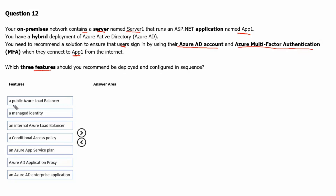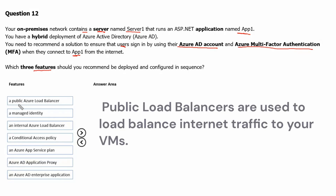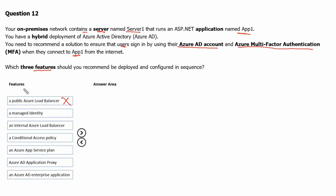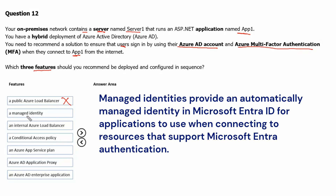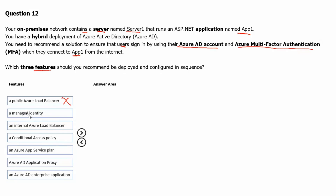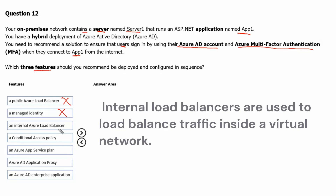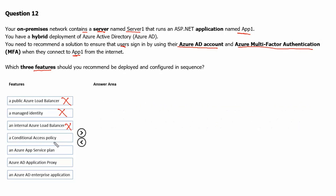Option 1: A public Azure load balancer. Public load balancers are used to load balance internet traffic and are not used for authentication purposes, therefore this feature is not useful. Option 2: A managed identity. Managed identities are automatically managed identities in Microsoft Entra ID for applications to use when connecting to resources that support Microsoft Entra authentication, so managed identities are not used in user authentication. Option 3: An internal Azure load balancer. Internal load balancer is a networking service that distributes network traffic to resources within a virtual network and has nothing to do with authentication.